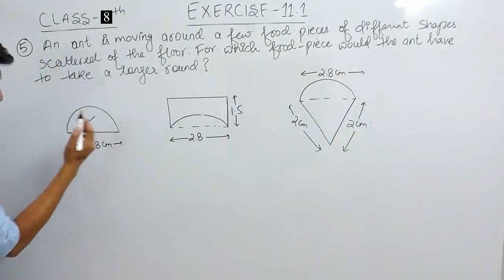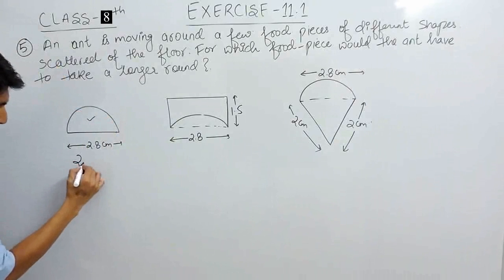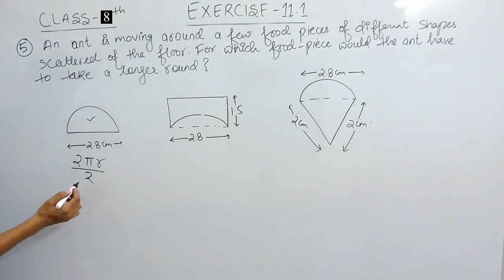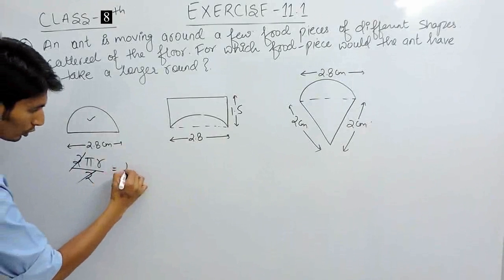What should be the circumference? It should be 2πr is the circumference for whole circle, and if you want to find for semicircle, it is πr.